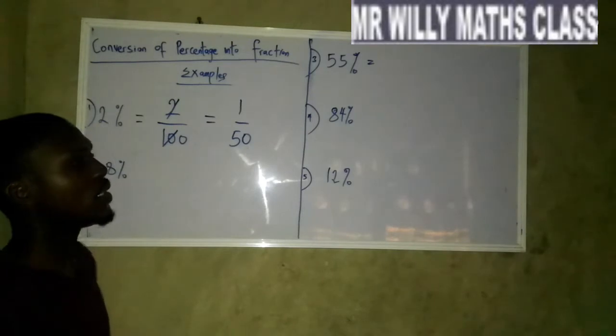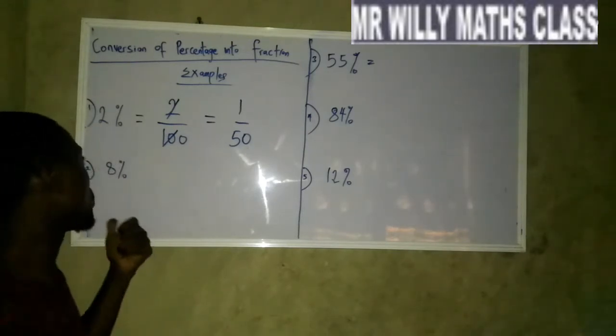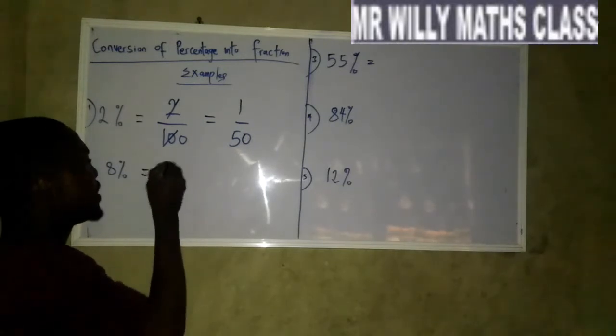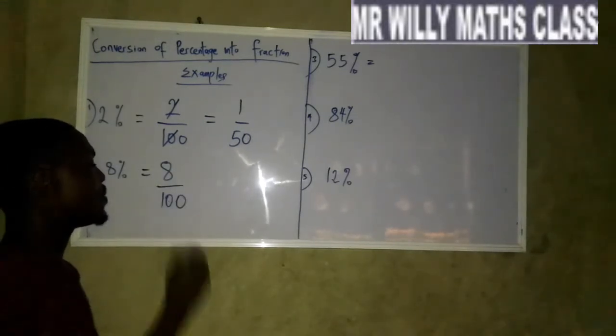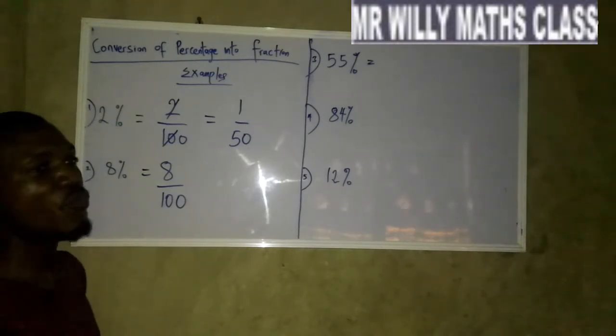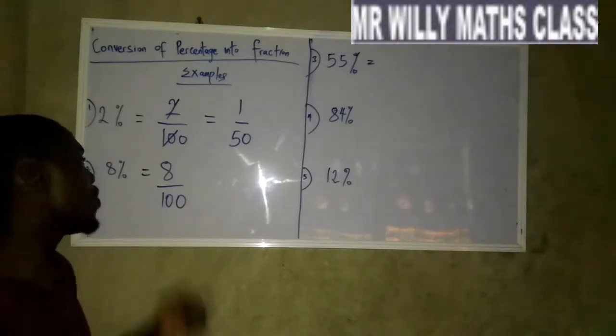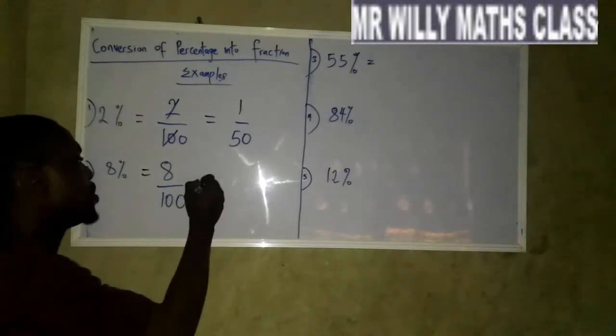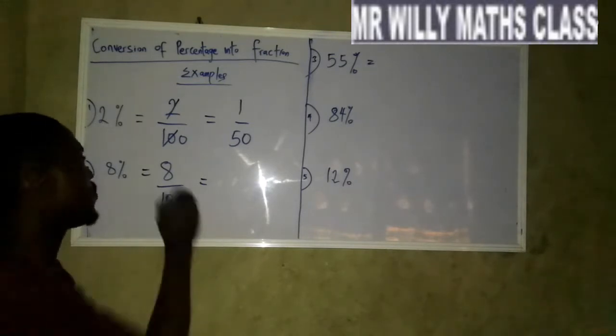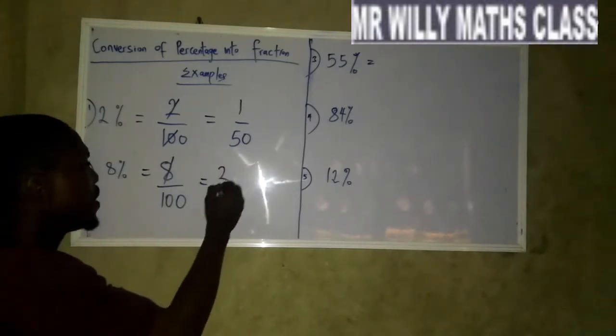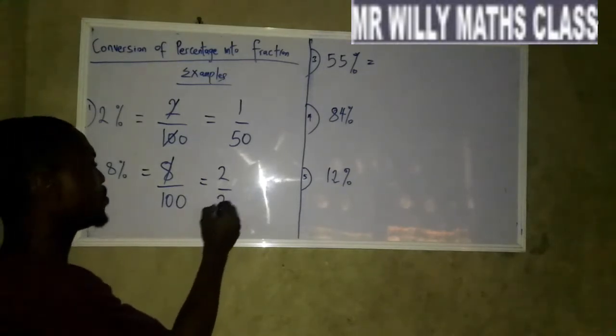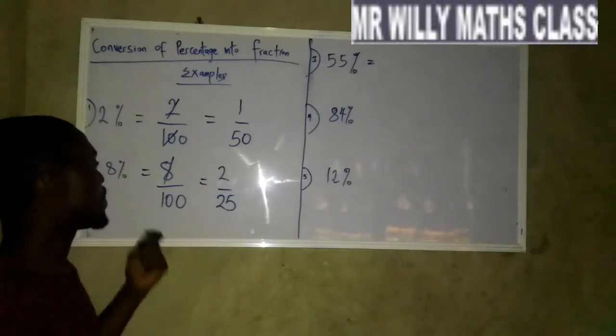Now let's move to question 2. 8% simply means 8 divided by 100. Now we have turned it into a fraction. The next thing is that we'll break it down to a common factor for 8 and 100. You can use 4. 4 goes into 8 two times and how many 4 can you see in 100? That's 25. So 8% as a fraction is 2 over 25.